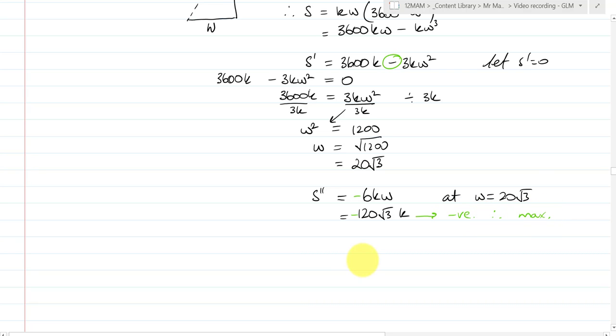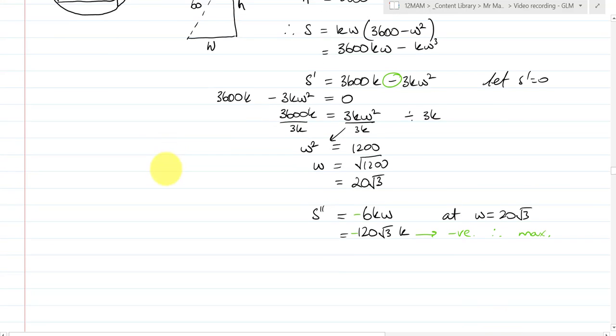So be careful to avoid those errors. Do you notice I spotted that there? Because I put a positive K in, gave me a positive second derivative, which is a minimum, and I went, I'm not trying to find a minimum strength. These questions will work. Expect them to work. Look for them to work. And if they don't work, you've probably made a mistake. Now, I've got a strength value, well, I've got a, I know that that W gives me a maximum strength, but it's just asking me for the dimensions.